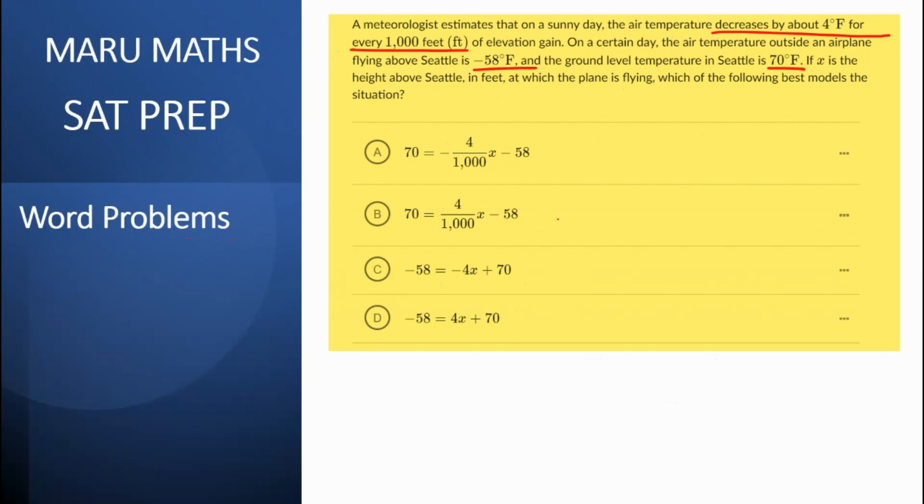So in such a question, what we should be looking at is if the height of the plane is x feet, right? Then the temperature is decreasing. So my ground temperature is going to be 70. And for every 1000 feet of height, the temperature is decreasing. So I would say minus 4 by 1000 times x would be the temperature of the plane.